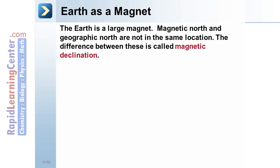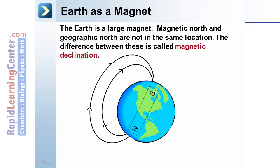The Earth as a magnet. The Earth itself is a large magnet. Magnetic north and geographic north are not exactly in the same location. The difference between these two is called magnetic declination. This magnetic declination is often important when navigating with maps and is often printed and referenced on a map.